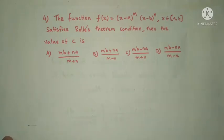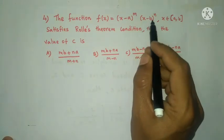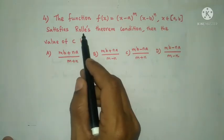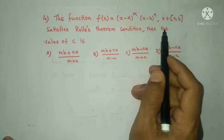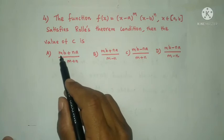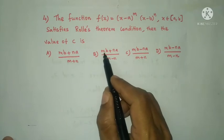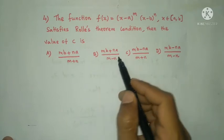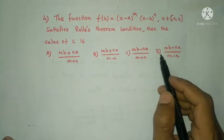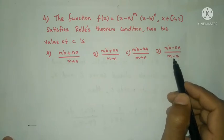Next question: the function f(x) = (x − a)^m · (x − b)^n where x belongs to the closed interval [a, b] satisfies Rolle's theorem condition. Then the value of c is? Option A: (mb + na)/(m + n). Option B: (mb + na)/(m − n). Option C: (mb − na)/(m + n). Option D: (mb − na)/(m − n).